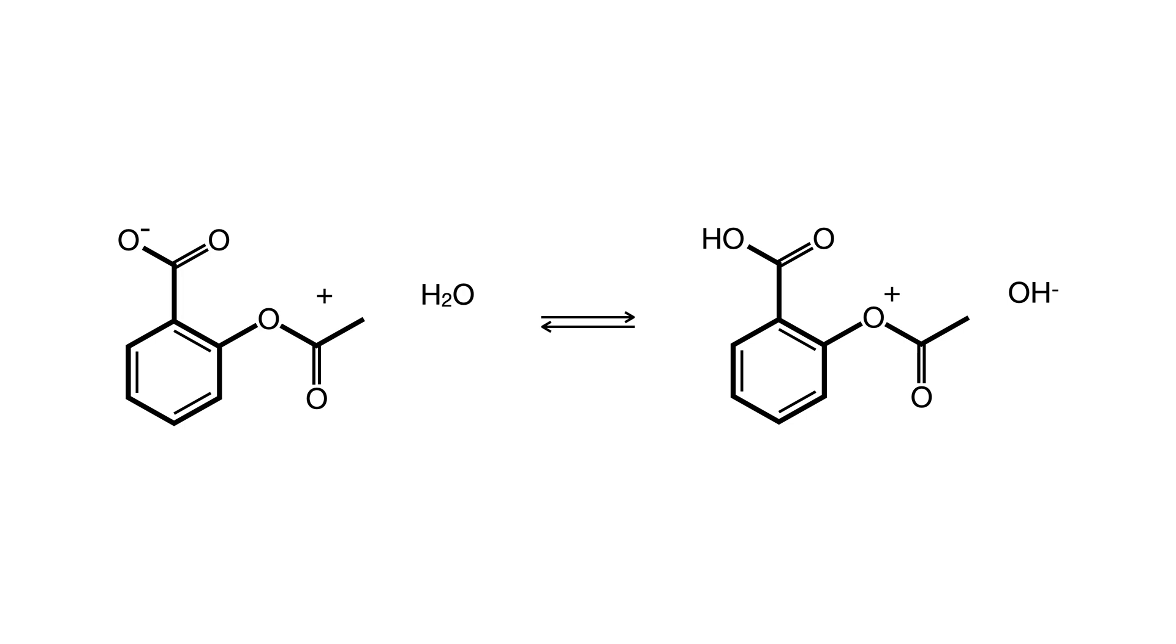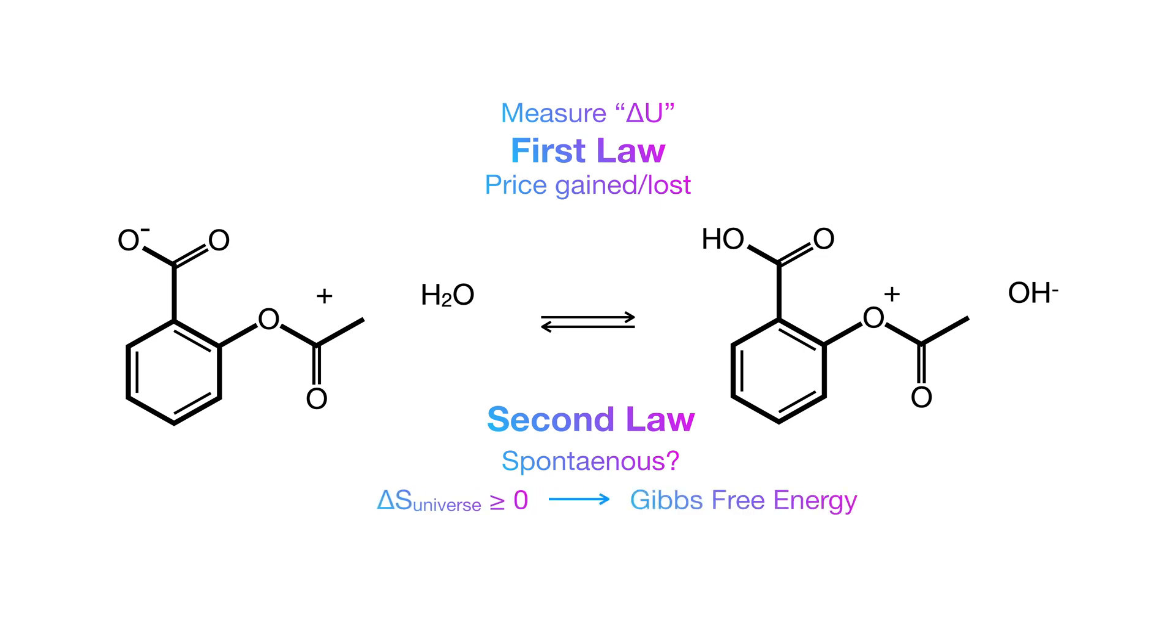So in summary, the first law gives us a way to know the price we pay for reactions. Not only that, but in this series, we'll definitely touch on the practical ways we can measure changes in internal energy. The second law tells you whether a reaction will spontaneously happen by leveraging the fact that the entropy of the universe always increases, and we'll be modifying that vague statement into something more applicable to chemical reactions.